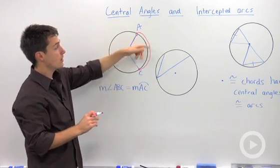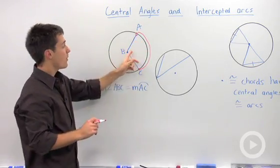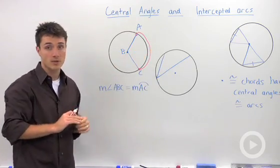So this is called our intercepted arc. And for central angles, they will always be congruent to their intercepted arc.